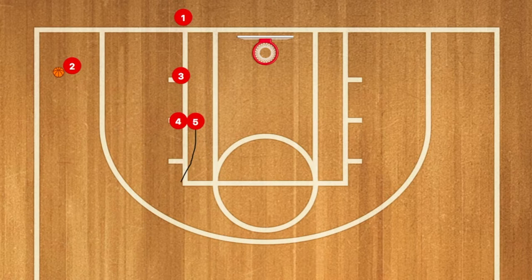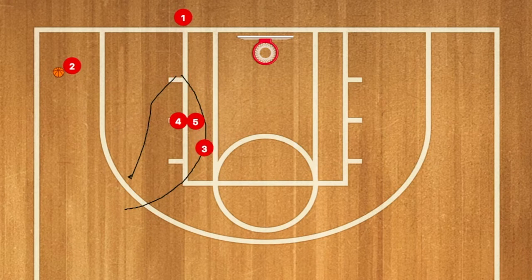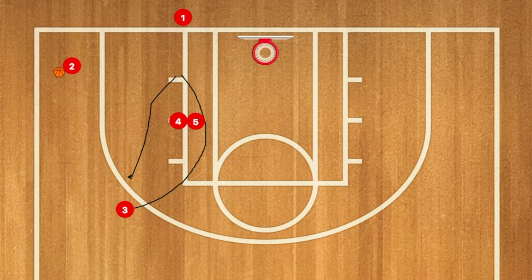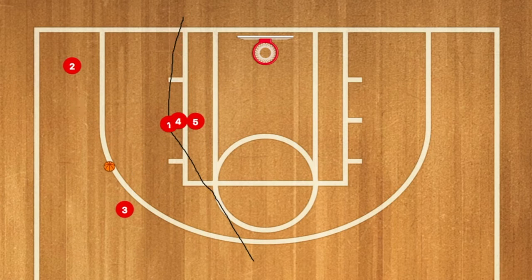Then four and five will set up a double screen for player three. Three will use that screen — he can either go left or right depending on where his defender is guarding him. Then player two will pass him the ball.